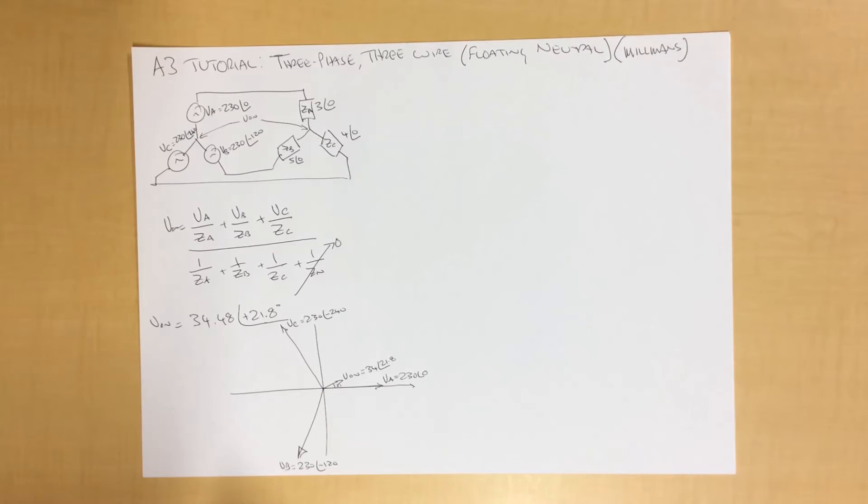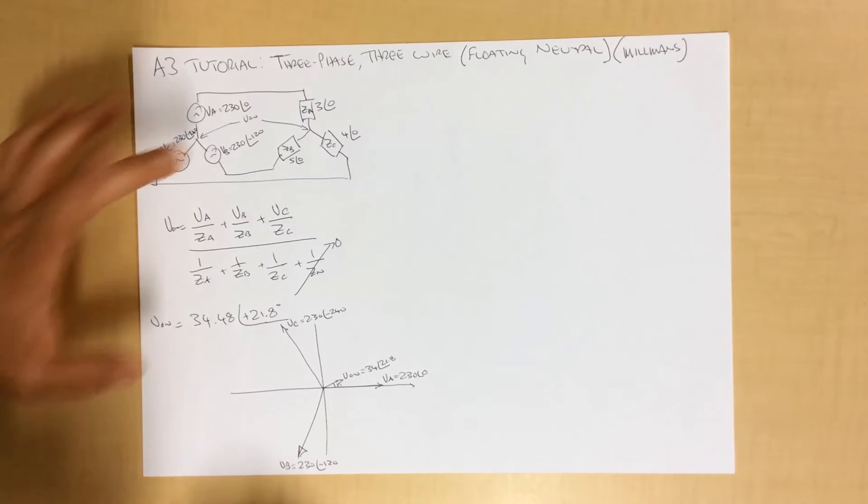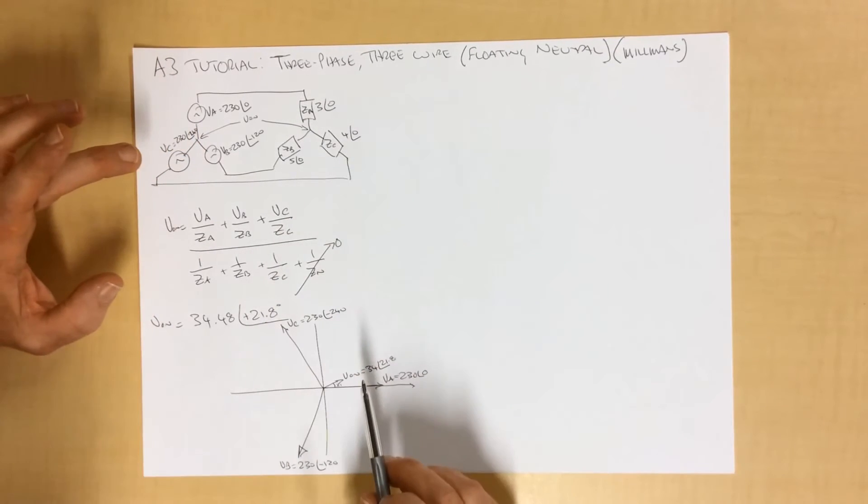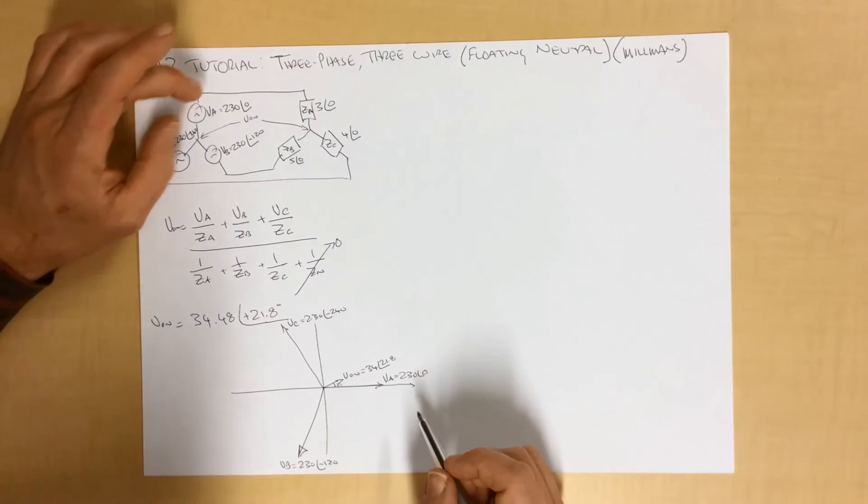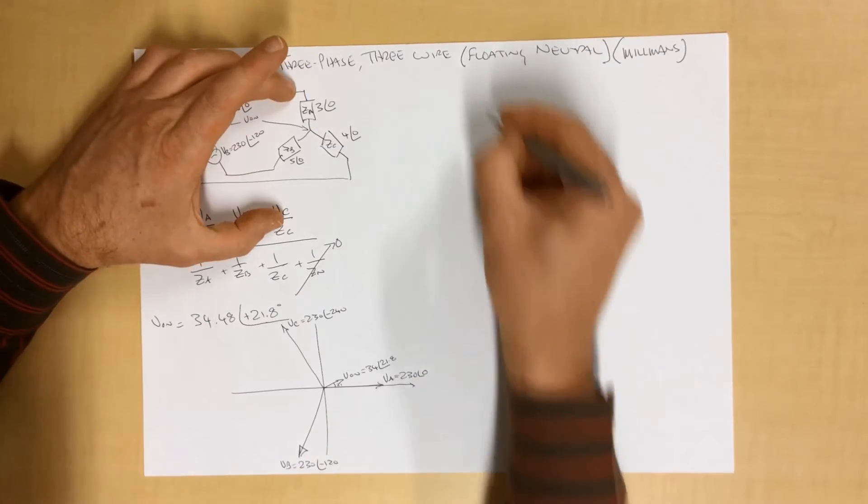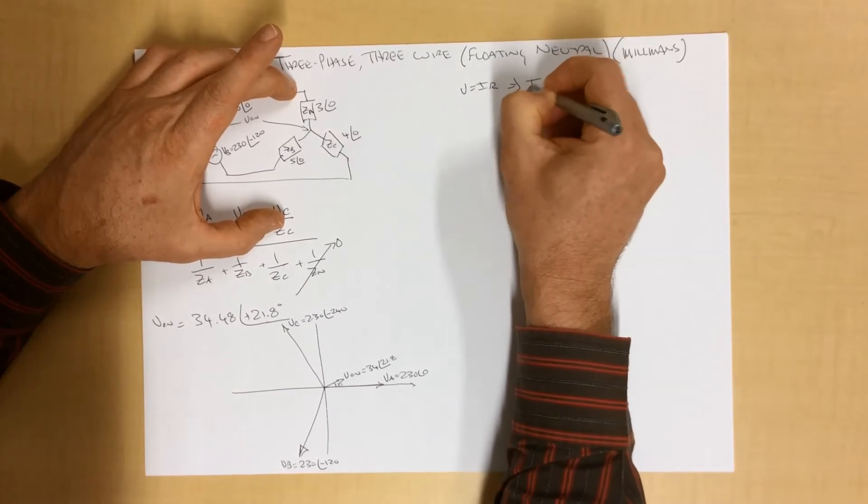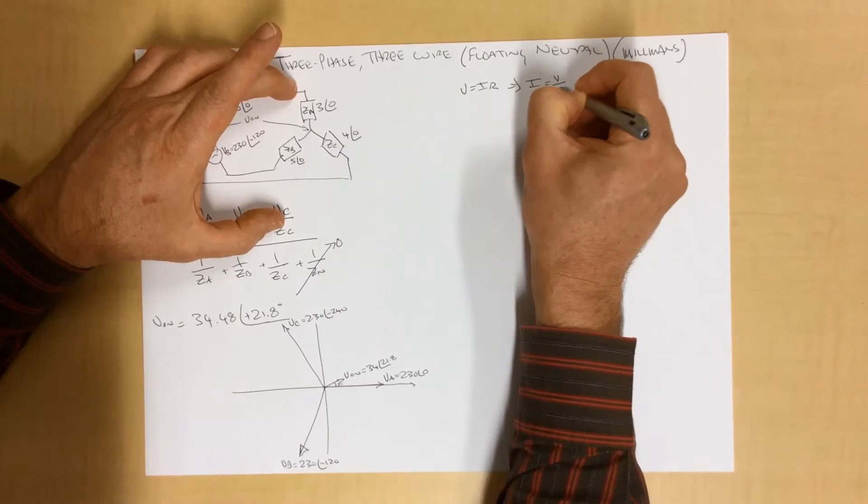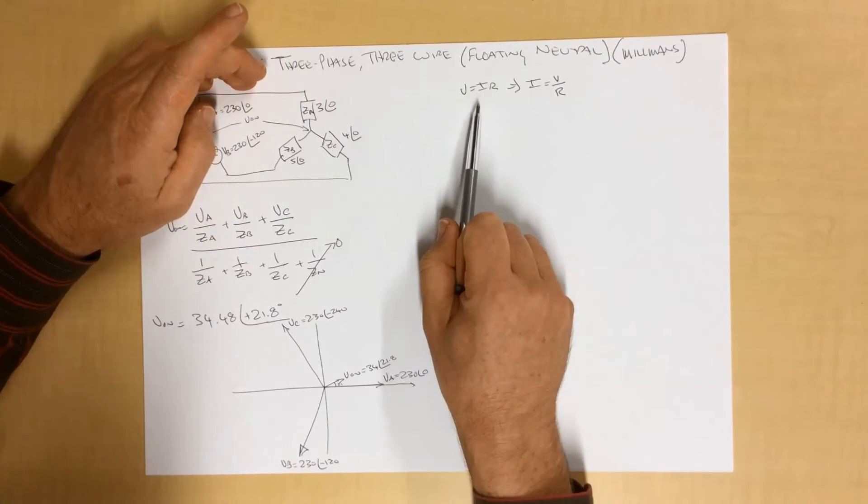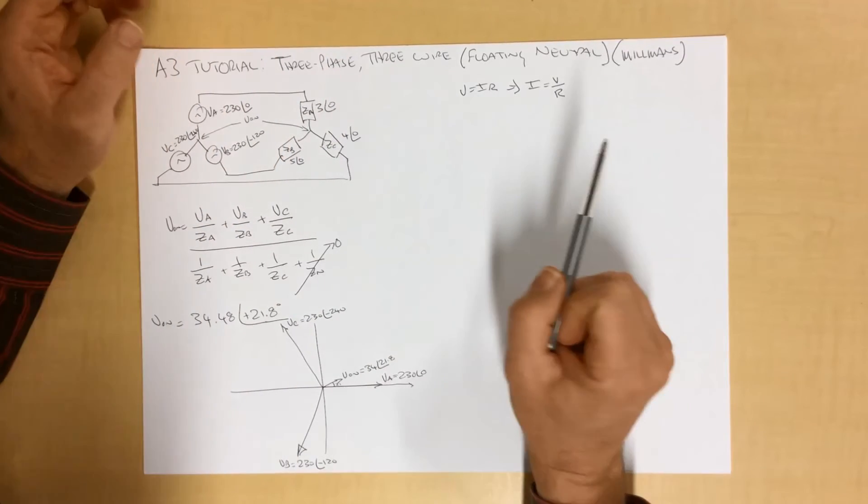We now want to find out what currents are flowing in this system. And the process for doing that is, now that we know what this voltage is, is quite simple. Because we can see that, we know from Ohm's law that the current through something, the current through an impedance is the voltage over it divided by the impedance. This is basic Ohm's law stuff.